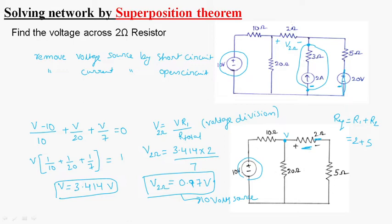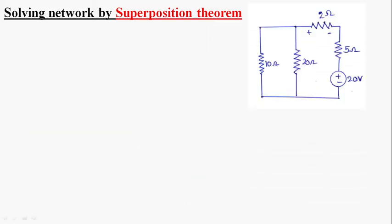Next, we consider the 20 volt voltage source and neglect the 10 volt source and 2 amp current source. After redrawing the circuit, we obtain the new network. We now need to find the voltage across the 2 ohm resistor in this configuration, noting the direction of voltage across it.